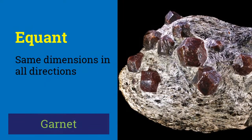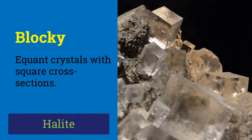We call a crystal equant when it approximately has the same dimensions in all directions. Garnet shows this equant habit, and so does spinel. Those equant crystals which have approximately square cross-sections are called blocky. The halide crystals shown here clearly demonstrate blocky habit, and crystals of vialena also have this habit.